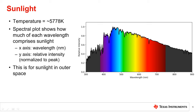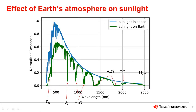Sunlight in space is most intense between 470 and 510 nanometers, which consists of blue and green colors. The sunlight we see on Earth must pass through the atmosphere, and this has an effect on the light that makes it through.